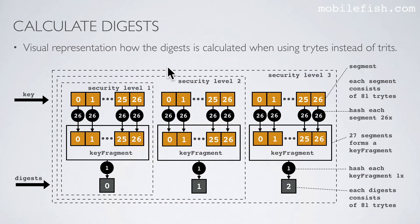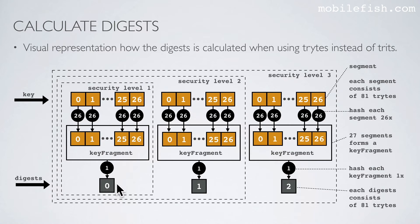Here is a simplified explanation using trits. This is the key — each square represents a segment, and each segment consists of 81 trits. Each segment is hashed 26 times. 27 segments form a key fragment. We take the total key fragment and hash it one time to get the digest — each digest consists of 81 trits. Security level 1 gives one digest of 81 trits. Security level 2 gives 2 digests, each of 81 trits. Security level 3 gives 3 digests, each of 81 trits.